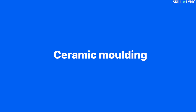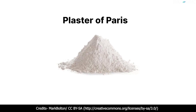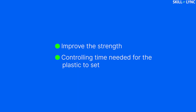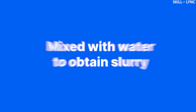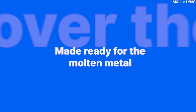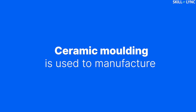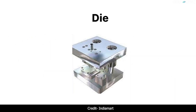Now we'll talk about ceramic molding. In this process, permanent patterns made of plastic, wood, metal, or rubber are used. The mold is made by mixing plaster of Paris with talc and silica flour. This is done to improve strength and control the time needed for the plastic to set. Once they are mixed completely, water is supplied to the mixture to obtain a slurry. This slurry is then poured over the pattern. Finally, the pattern is removed and the mold is cured in an oven to make it ready for molten metal. Ceramic molding is used to manufacture impellers, cutters for machining operations, dies for metalworking, etc.